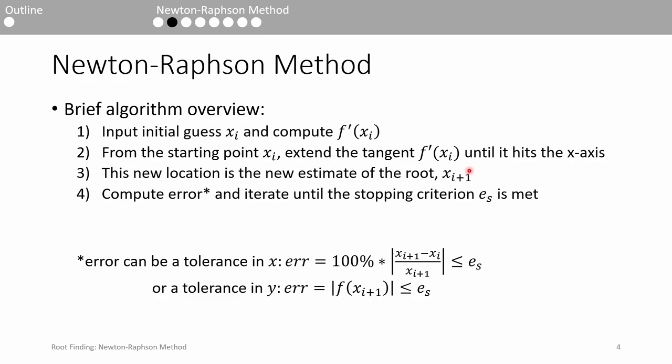Then, we sample the function at that point to obtain our root estimate. We repeat this process until we capture the root within our specified stopping criterion or tolerance.